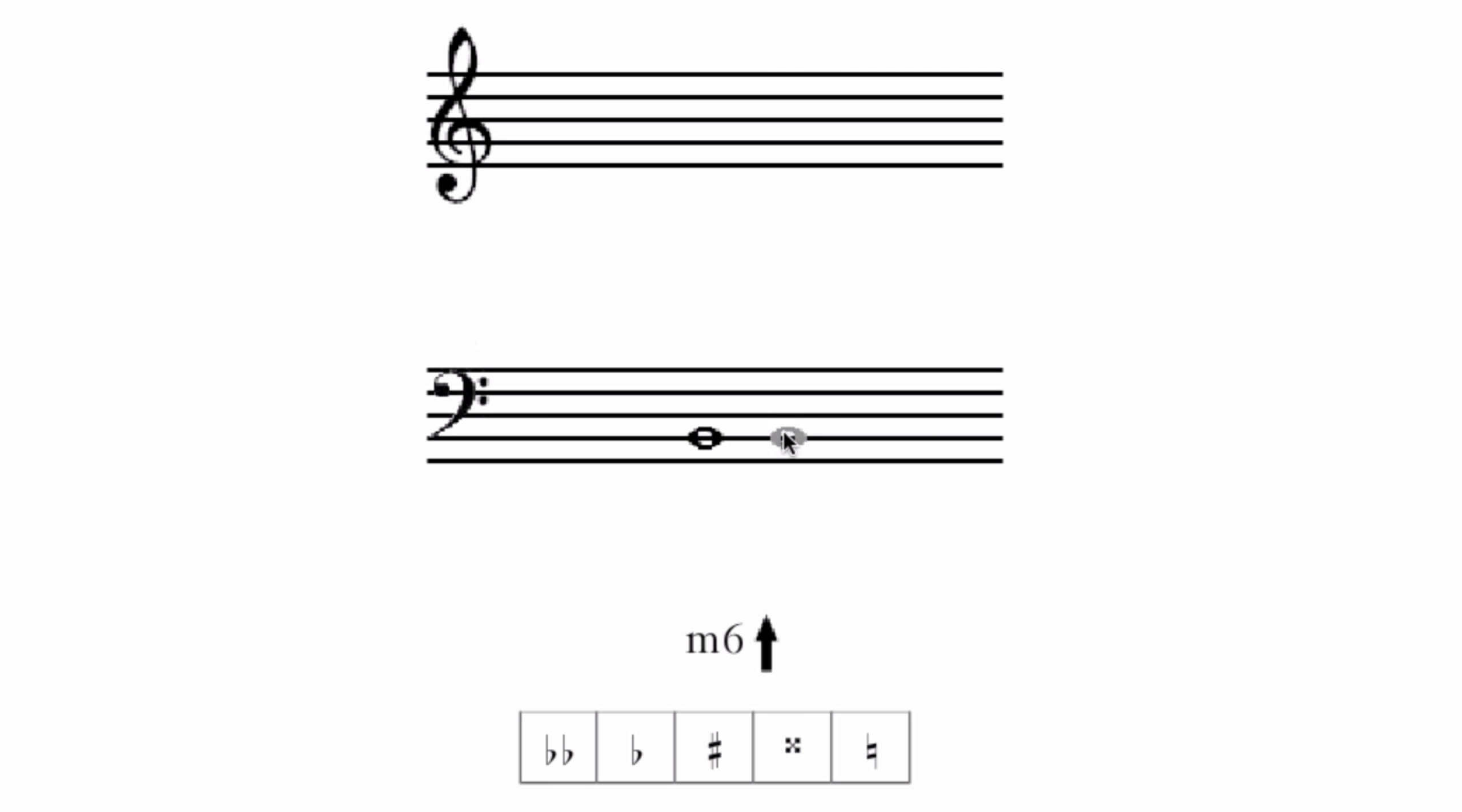Minor 6 up is the same as a major 3rd down. Major 3rd down, we know that 3rds based upon C, F, or G, in this case G, are major 3rds. So a major 3rd is G to B, and a minor 6 would be B to G.